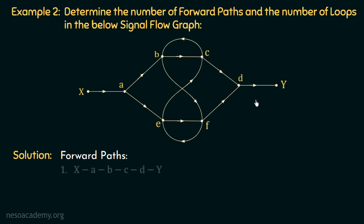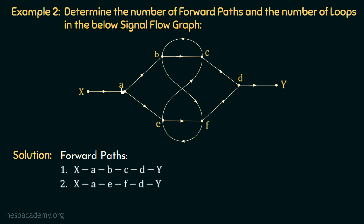This is the first forward path: X, A, B, C, D, Y. Now let us find another way. Starting from the input node X, if we move to node A, then to node E, then to node F, then to node D, and finally to node Y — this is the second forward path: X, A, E, F, D, Y.